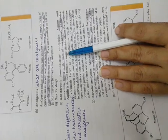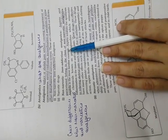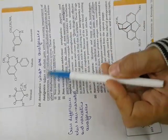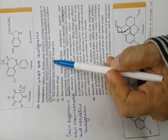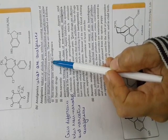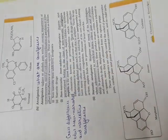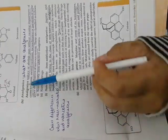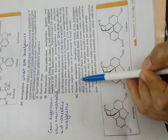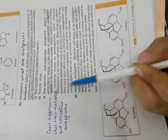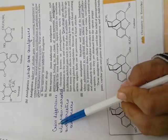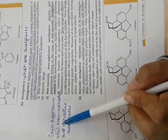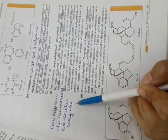What are analgesics? This is the exact definition: they reduce or abolish pain without causing impairment of consciousness or mental confusion. Analgesics are of two types: non-narcotic and narcotic. So you can get a question - give difference between non-narcotic and narcotic analgesics.